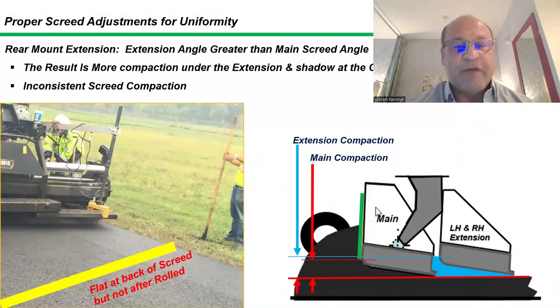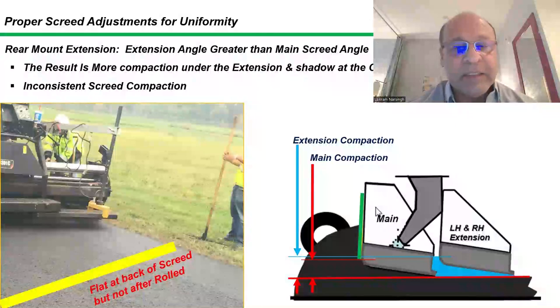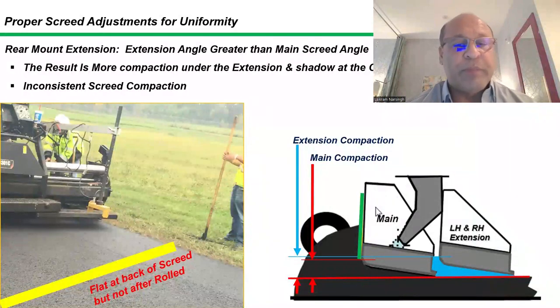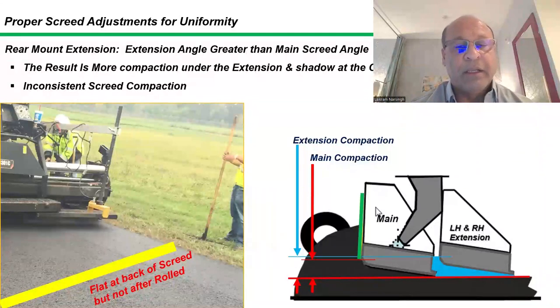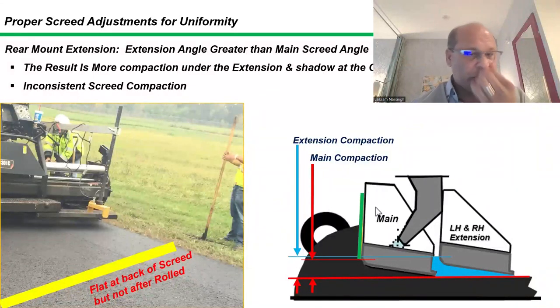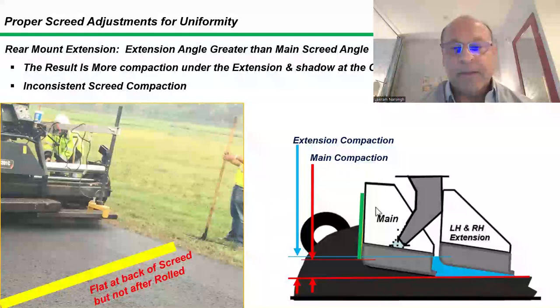We have more in-place density and less air voids to be pushed out under the extension screed compared to the main screed. So after rolling, if we put a straight edge again, it will not be flat.